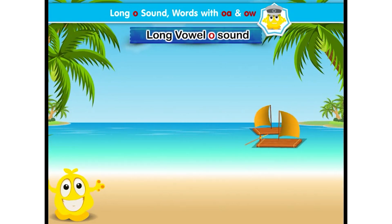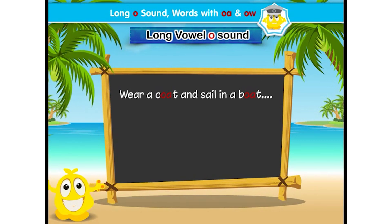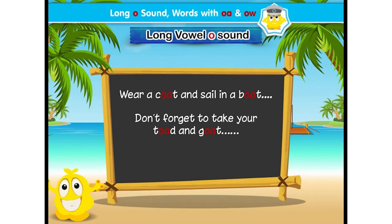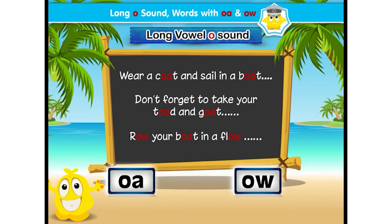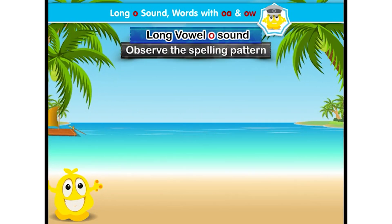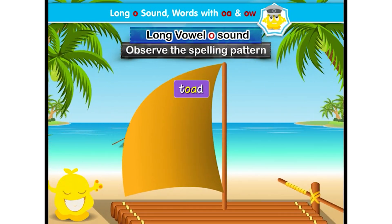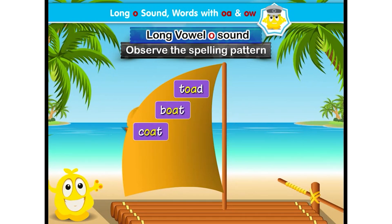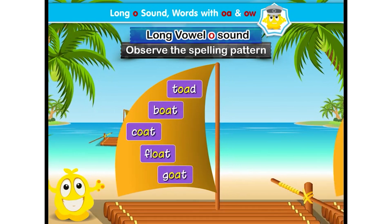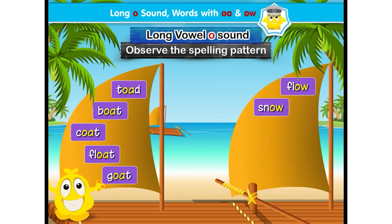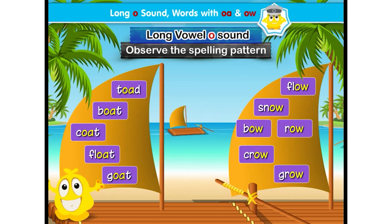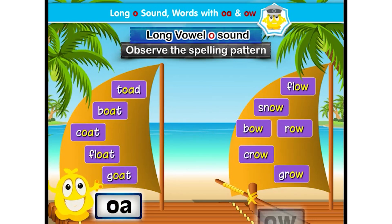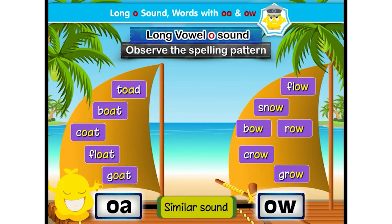Long O sound. It's time to learn about long vowel O sound. Wear a coat and sail in a boat. Don't forget to take your toad and goat. Row your boat in a flow. Now listen to the words and observe the spelling pattern: toad, boat, coat, float, goat, flow, snow, bow, row, crow, grow. In all these words, O-A and O-W have a similar sound — it's long vowel O sound.